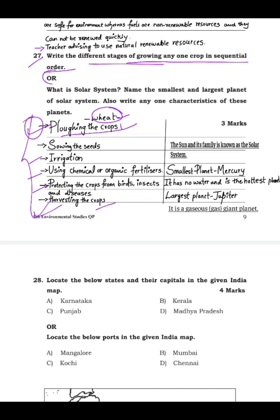Or the other option for question 27: what is the solar system? The sun and its family — including planets and asteroids — is known as the solar system. Name the smallest and largest planet with one characteristic each. Mercury is the smallest planet — it has no water and is the hottest planet in the solar system. Jupiter is the largest planet — it is a gaseous giant, meaning it is a very large gas planet.